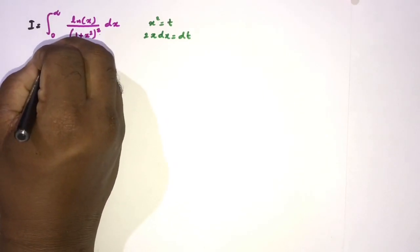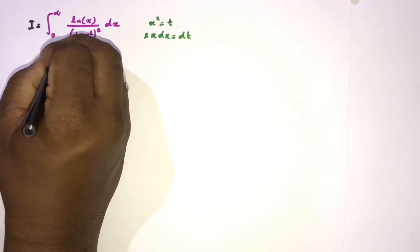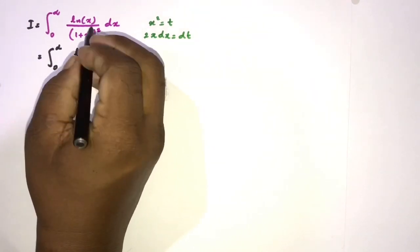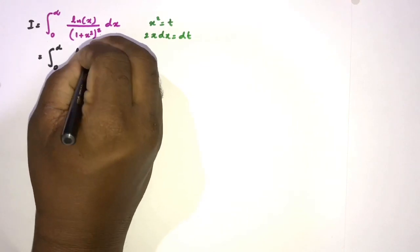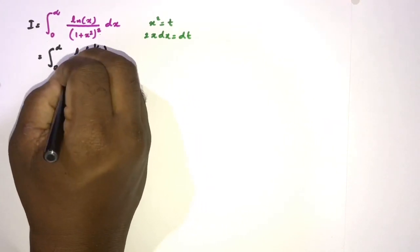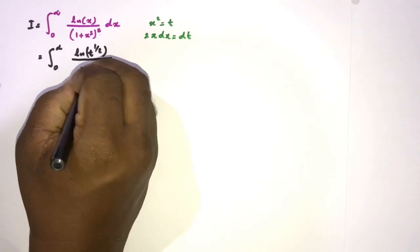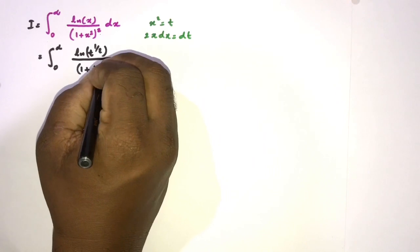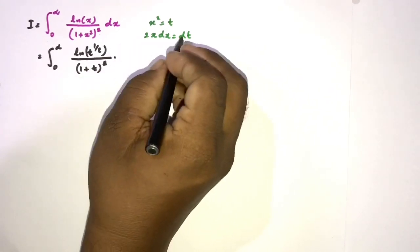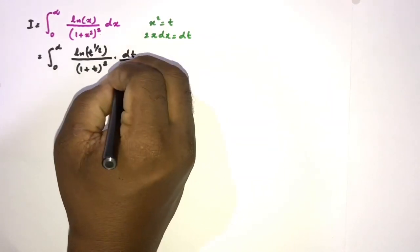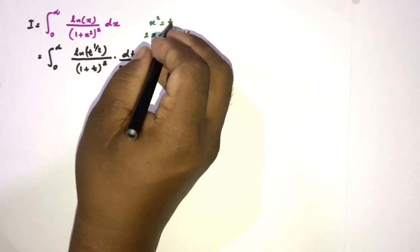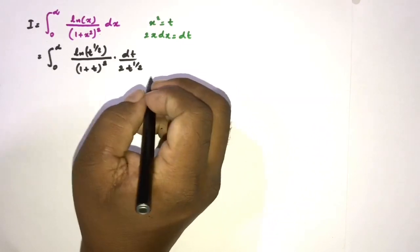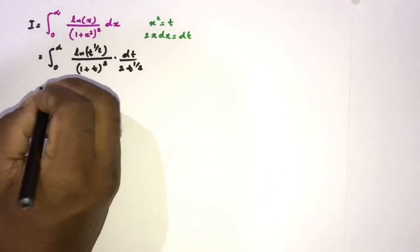I equals the integral from 0 to infinity. The natural log of x — we know x equals t to the one-half — so t to the one-half, over 1 plus x squared which is 1 plus t, squared, and dx equals dt over 2x, where x equals t to the one-half.